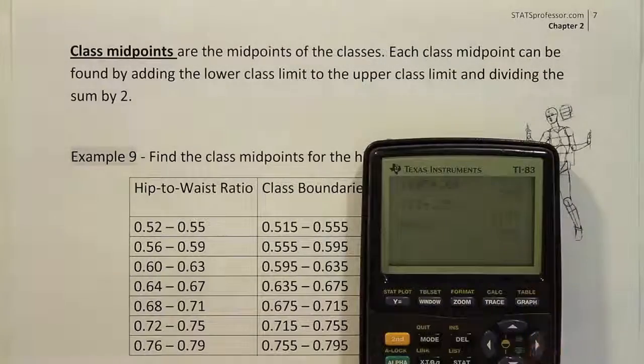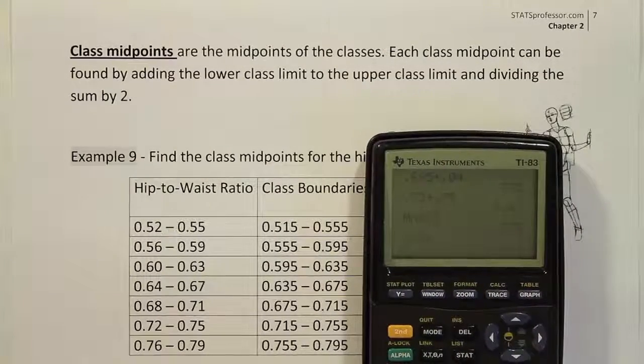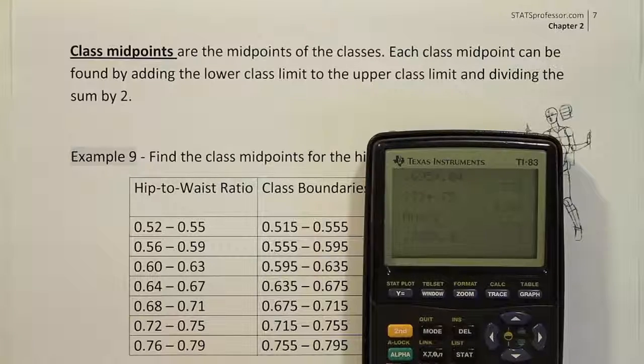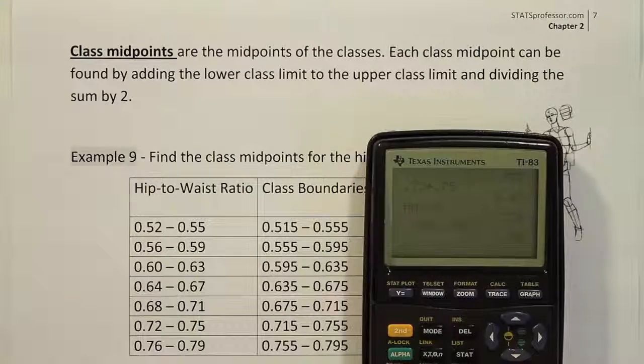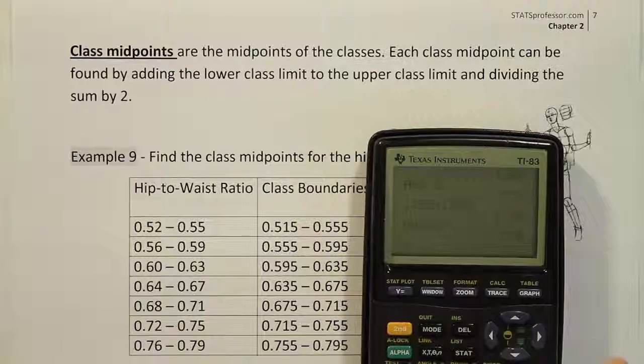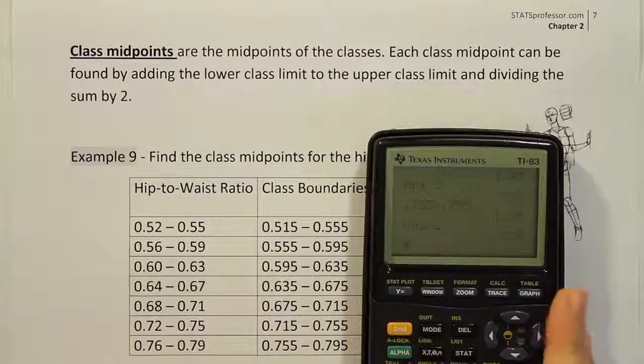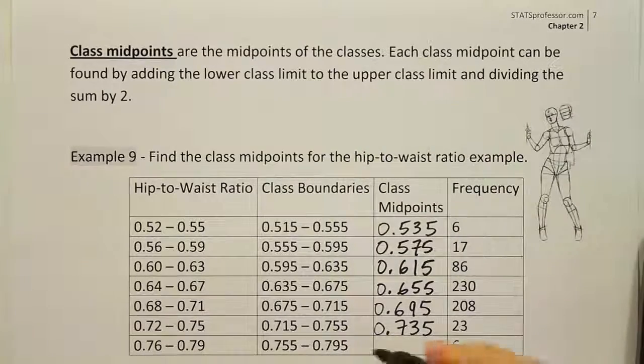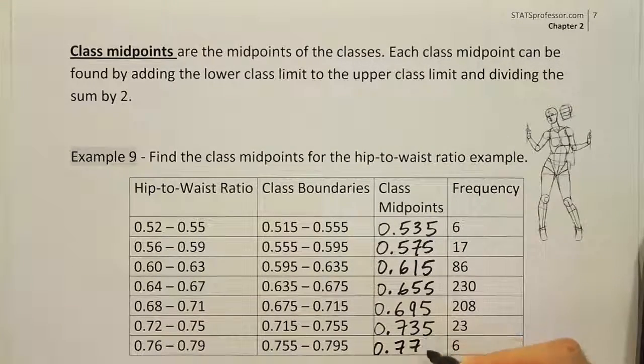So let's do that for the last one. If I took .755 and added to that .795, and then I divided that by 2, you would see I get .775. And that's the same answer you get here if you do the same arithmetic we've been doing. So 0.775.